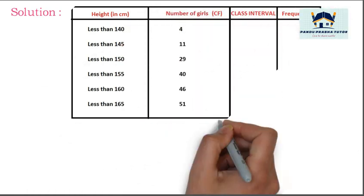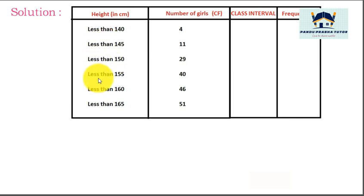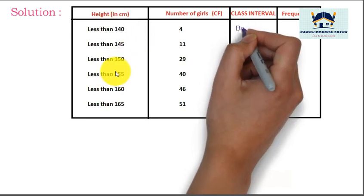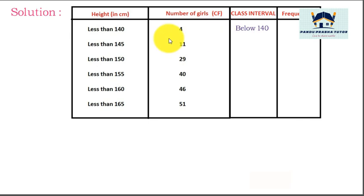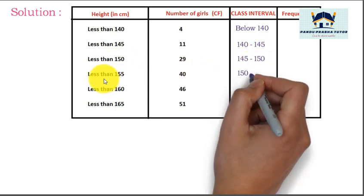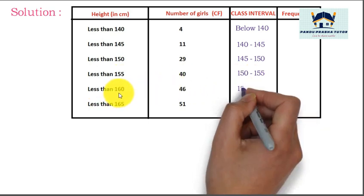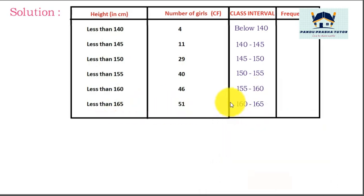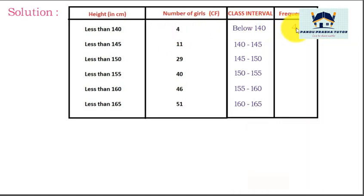Observe the table. This is a less-than type distribution with height and number of girls as cumulative frequency. We have to find the class interval and then frequency. From the heights list, the class intervals are: below 140, then 140–145, 145–150, 150–155, 155–160, and 160–165.